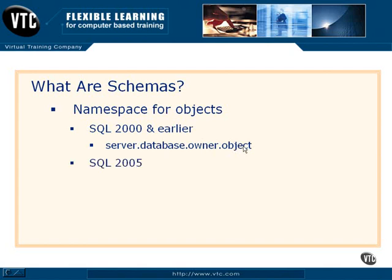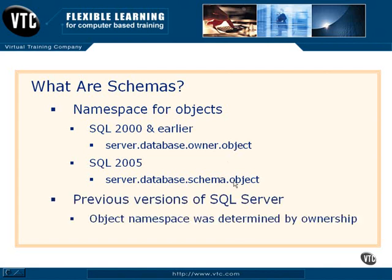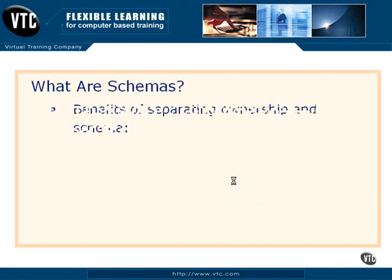In the new SQL Server, SQL 2005, that has now been changed. Notice the subtle difference: we now refer to them as server.database.schema.object. So now, a particular table is part of a particular schema, not simply based on the fact that it is owned by a certain person. In previous versions of SQL Server, object namespace was determined by ownership. Now it's determined by schema.